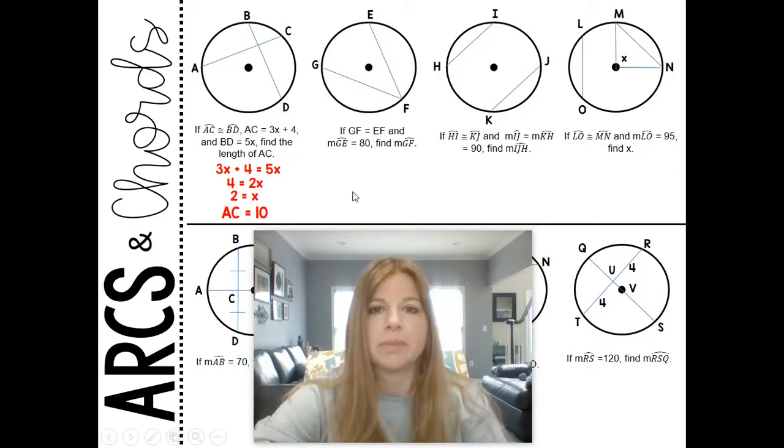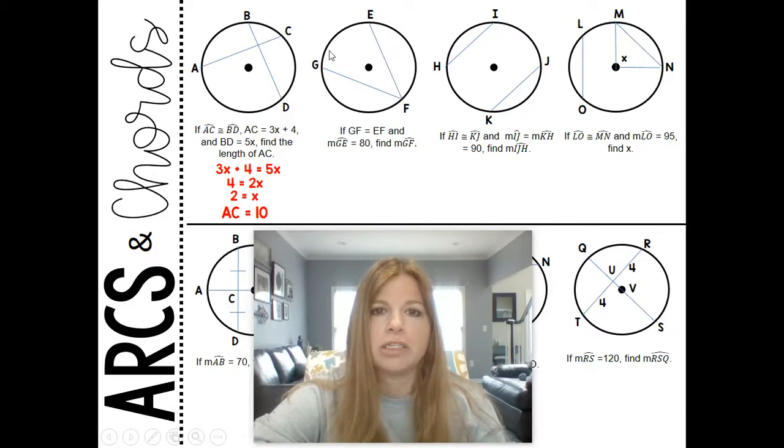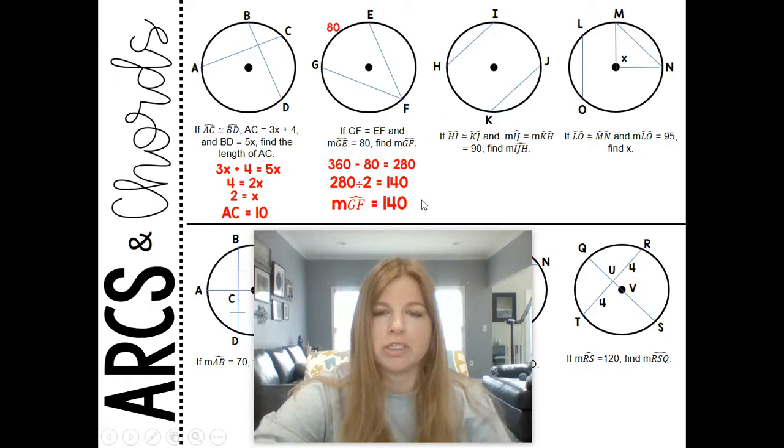Which would also mean BD has a value of 10 as well. Next one: if segment GF has a measure that's equal to segment EF, and arc GE is 80, find arc GF. Okay, so these are congruent segments, their measures are equal, so that means these arcs are congruent to each other. So GF is congruent to EF. And I'm given GE is 80. Well, I would need to figure out what GF is, and I know they're congruent to each other. So 360 minus that 80 would leave me with an arc measure of 280. And if they're congruent to each other, I'm going to cut that 280 in half, and that would be the measure of arc GF is 140.